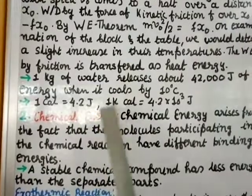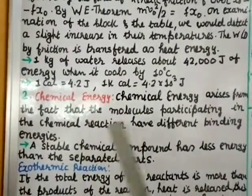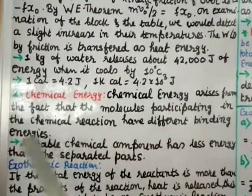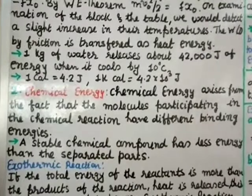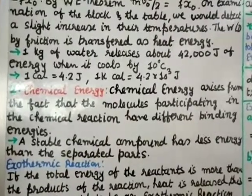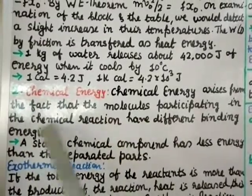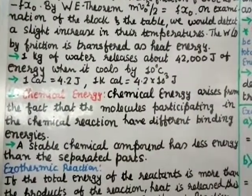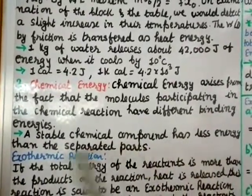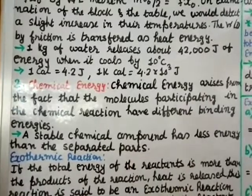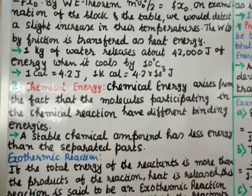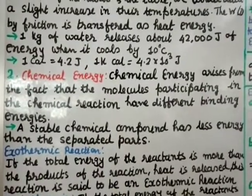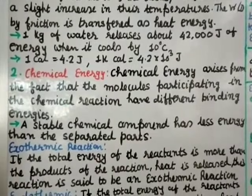Number two: Chemical Energy. Chemical energy arises from the fact that molecules participating in chemical reactions have different binding energies. A stable chemical compound has less energy than its separate constituent parts. When constituents are bound together, the compound becomes stable and has less energy than the separate parts.